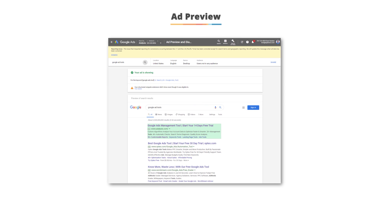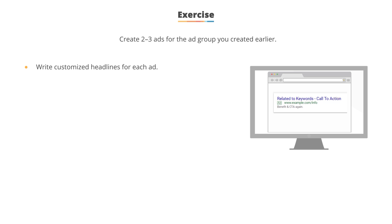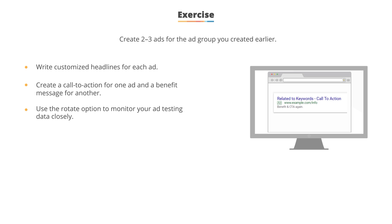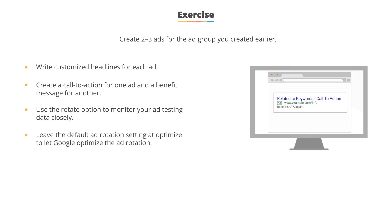Whenever you want to see what keywords are showing an ad for a term, use the Google Ad Preview tool to see what the data looks like. For each of the ad groups you created, write two to three ads per ad group. It's suggested that you custom-write the headline for each ad group, then create a call to action and a benefit message for the other headlines. If you plan on watching your ad tests closely, use the rotate option in your campaign settings. If you're letting Google optimize your ad rotation, leave the default ad rotation setting, which should be set to optimize.